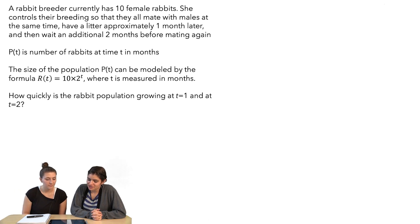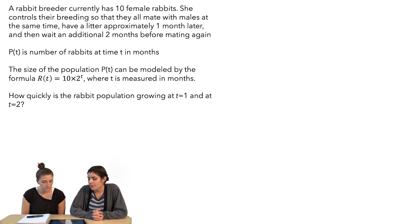A rabbit breeder currently has 10 female rabbits. She controls their breeding so that they all mate with males at the same time, have a litter approximately one month later, and then wait an additional two months before mating again. P(t) is the number of rabbits at time t in months. The size of the population P(t) can be modeled by the formula R(t) = 10×2^t where t is measured in months. How quickly is the rabbit population growing at t=1 and t=2?